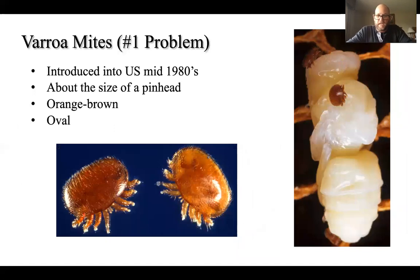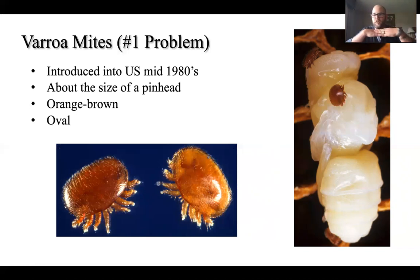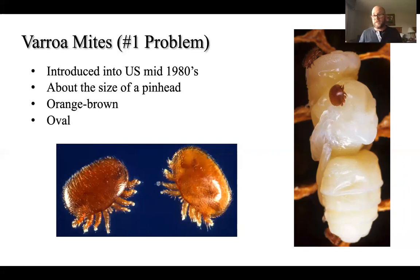Varroa was introduced in the US in the mid-80s. It's about the size of a pinhead — visible with the naked eye. However, you will never see it in your colony unless it is at epidemic proportions. Generally the mites hide underneath the segments of the abdomen where they can access soft tissue between those overlapping sclerotized segments to feed. That's why you don't see them. If you see mites walking around on bees, you have some serious mite load happening. They tend to be an orange to brown color and are oval in shape.